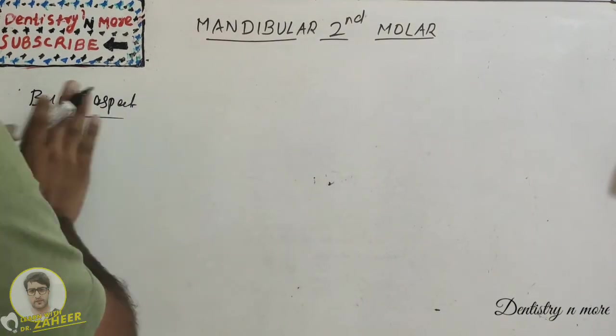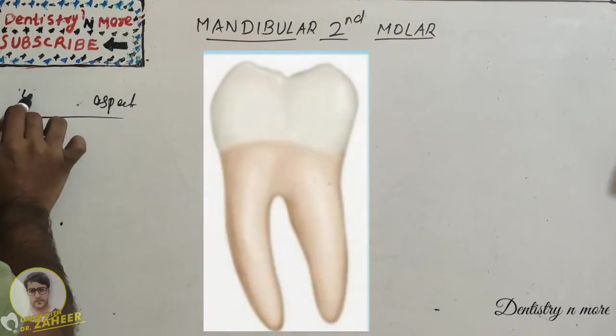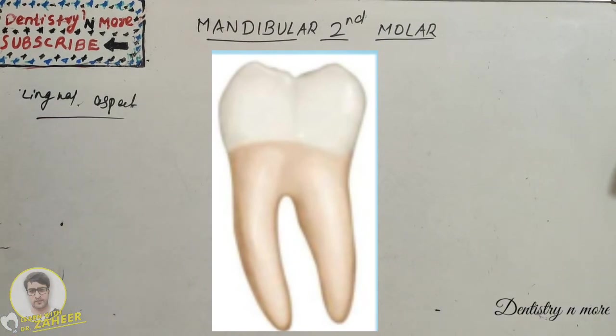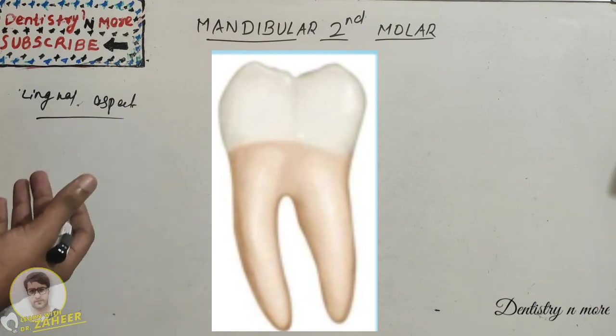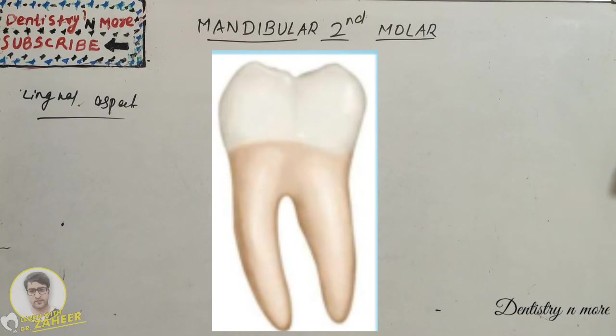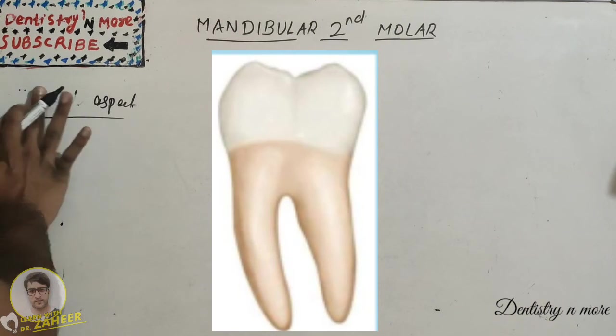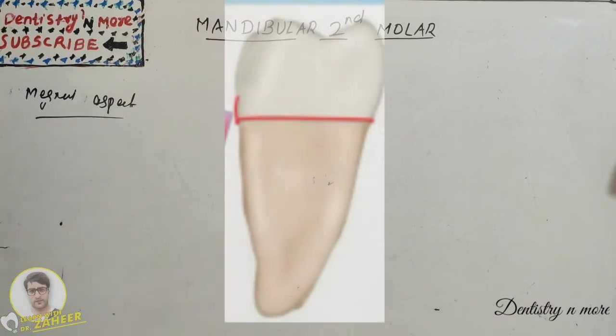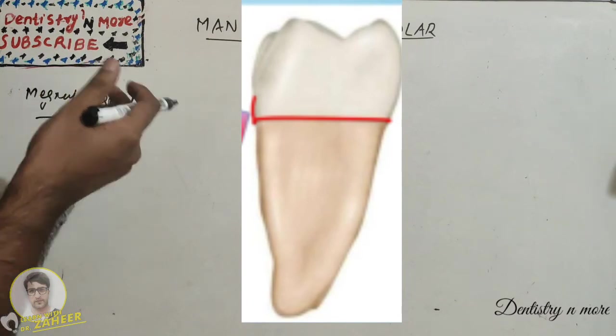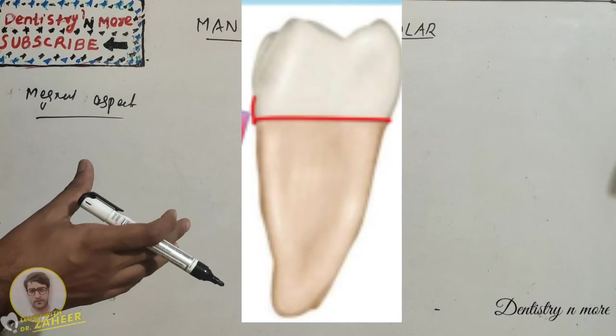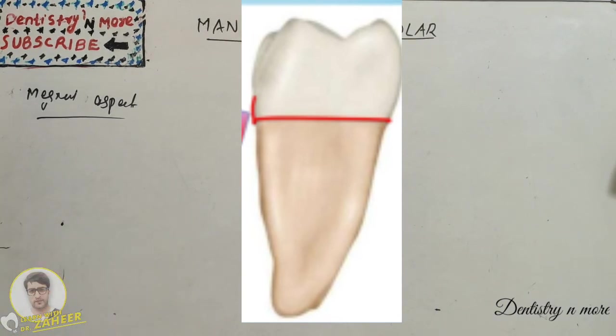Next we have our lingual aspect. Only the lingual cusp is in view because the tips of the lingual cusps are higher than the buccal cusp. Coming to mesial aspect, the cervical ridge buccally is less pronounced and occlusal surface is constricted buccolingually, and the cervical line shows no curvature, it is almost flat. The two roots may be seen from this side.